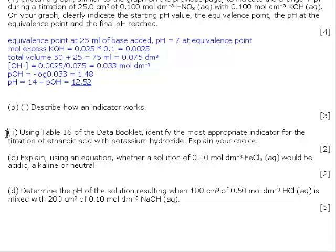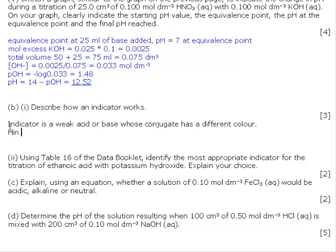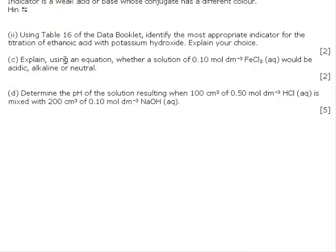Describe how an indicator works. An indicator is a weak acid or base whose conjugate has a different color. We can represent it by HIn. It interacts with the solvent to give H+ plus In-. And each of these has a different color.